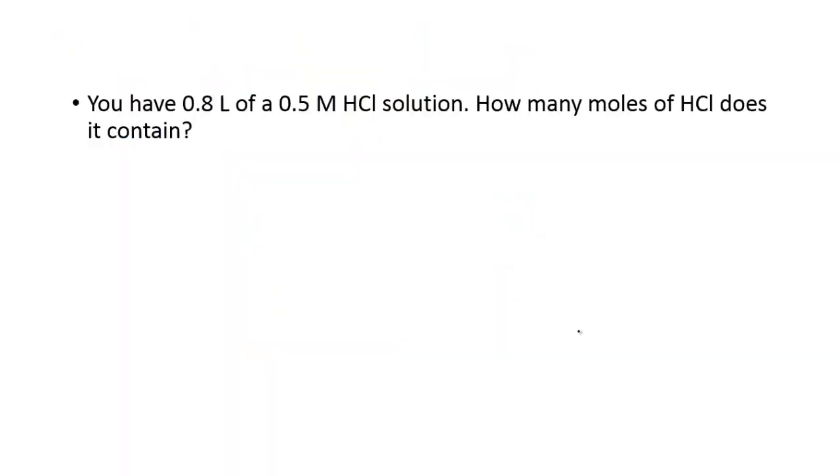We have 0.8 liters of a 0.5 molar HCl solution. So how many moles of HCl does it contain? So we're still looking at that same equation. So we still have moles over liters equals capital M. We just plug in what we know. So we have this for our liters and we have this for our molarity. That means what we don't know is moles, so that becomes X.